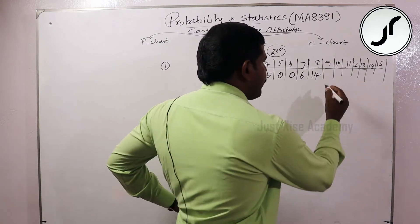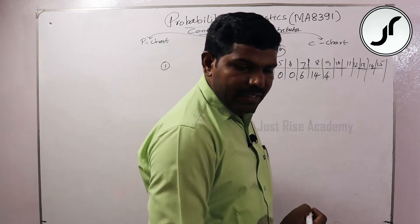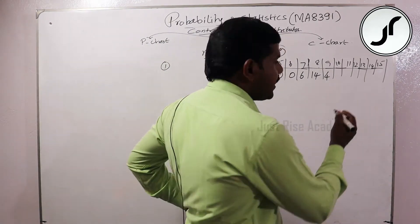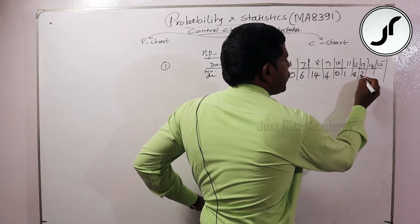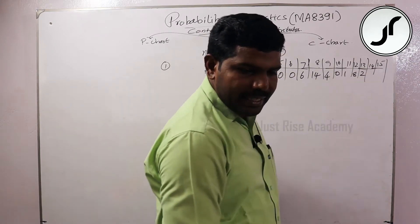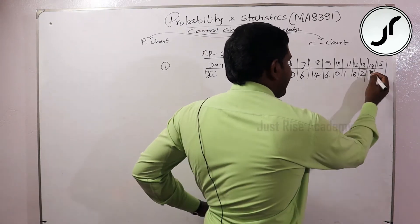Ninth day: four defective. Tenth day: zero. Then the remaining days: zero, one, eight, two. And then four, seven.